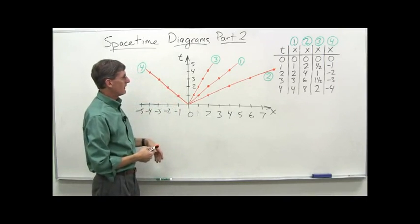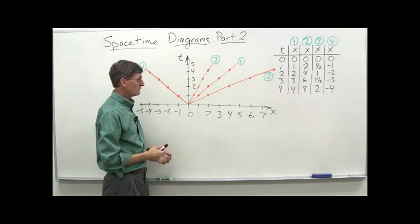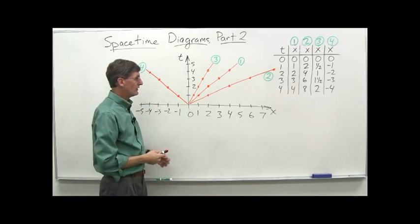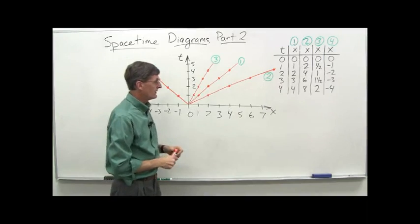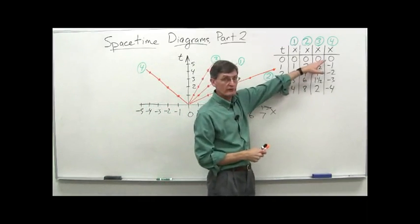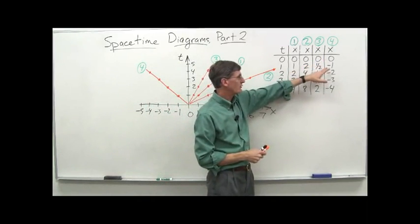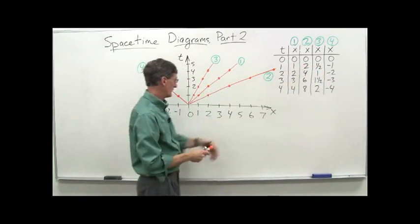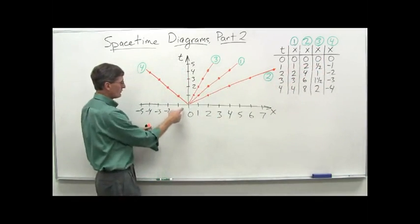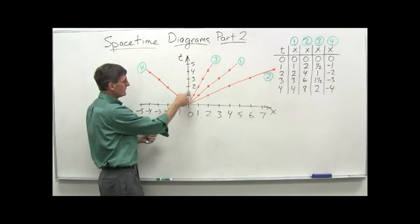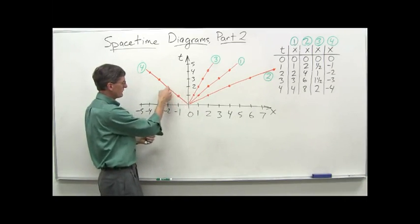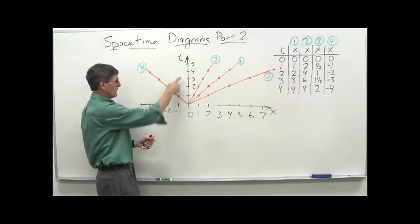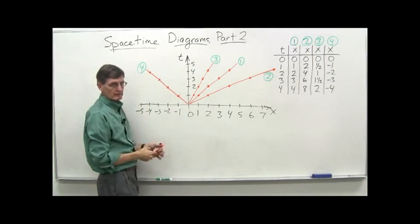The fourth run, just to do something different, we'll assume it's actually moving in the other direction. It starts at zero again, but then at t equals one it's at negative one, then negative two, negative three, negative four. So at t equals one it's at negative one, t equals two it's at negative two, t equals three it's at negative three, and t equals four it's at negative four.